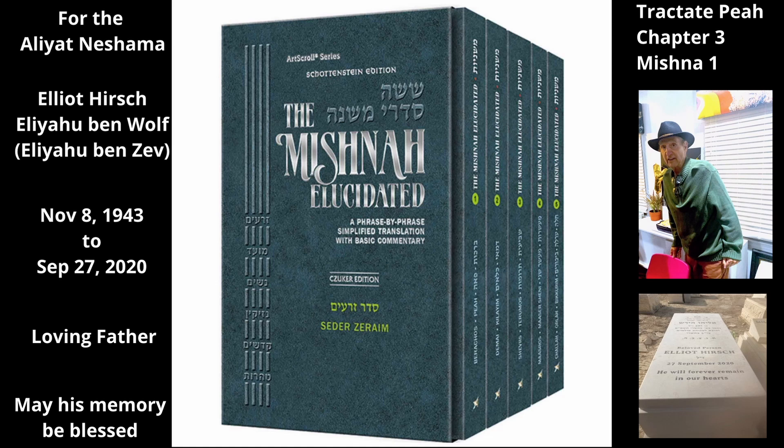If squares of grain were planted between olive trees, Beit Shammai say the farmer must leave some grain as payah for each and every one of the squares, because each is considered a separate field. But Beit Hillel say he may leave payah from one square for all of them, because they are all considered to be part of a single field, despite the spaces between them.